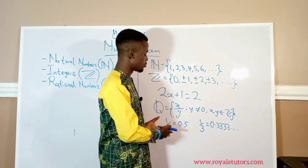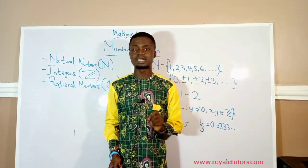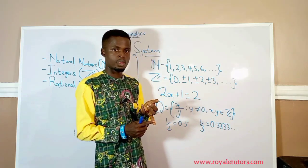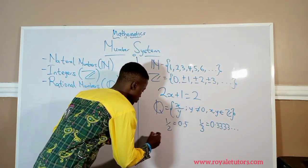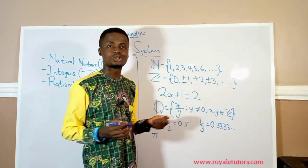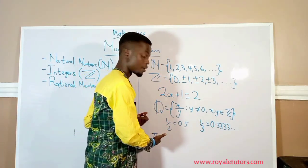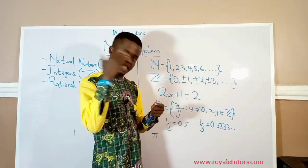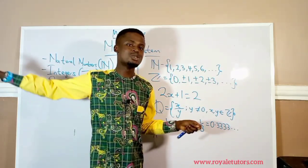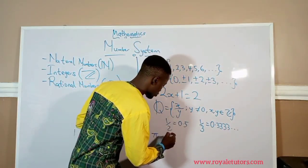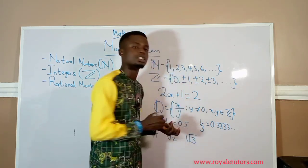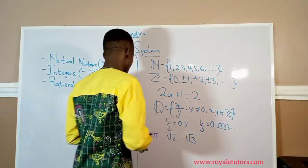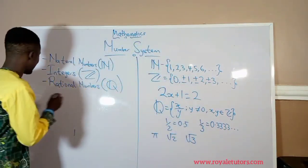In the quest of seeking rational numbers, they came across some numbers that when you convert them to decimals, they neither terminate nor reoccur. For example, pi is a number that does not terminate nor reoccur. Another example is the square root of 2, and the square root of 3. They are not repeating and not terminating. So they packed all these together to form irrational numbers.